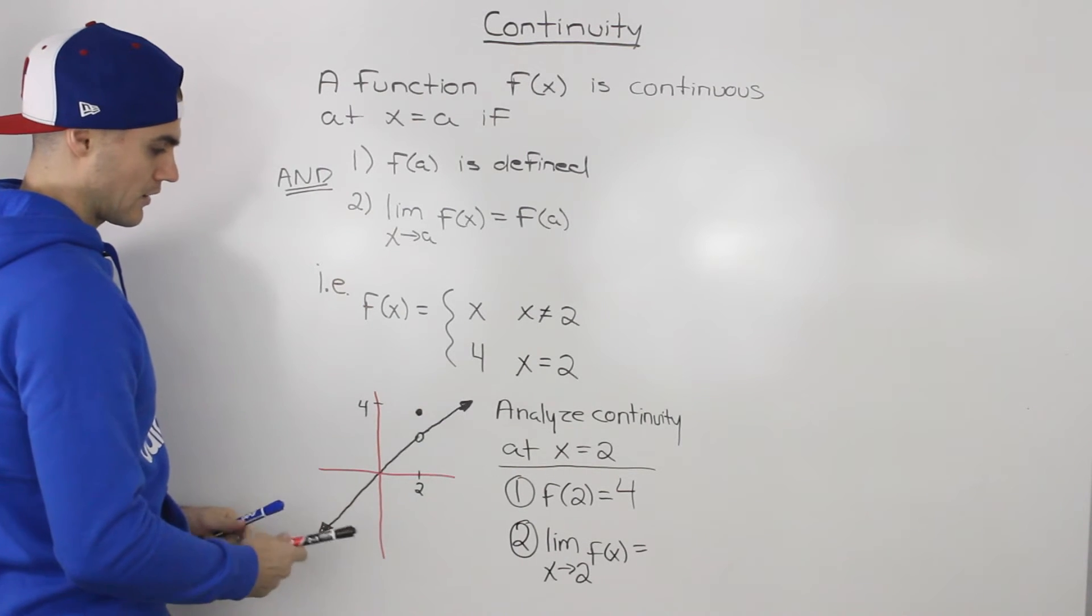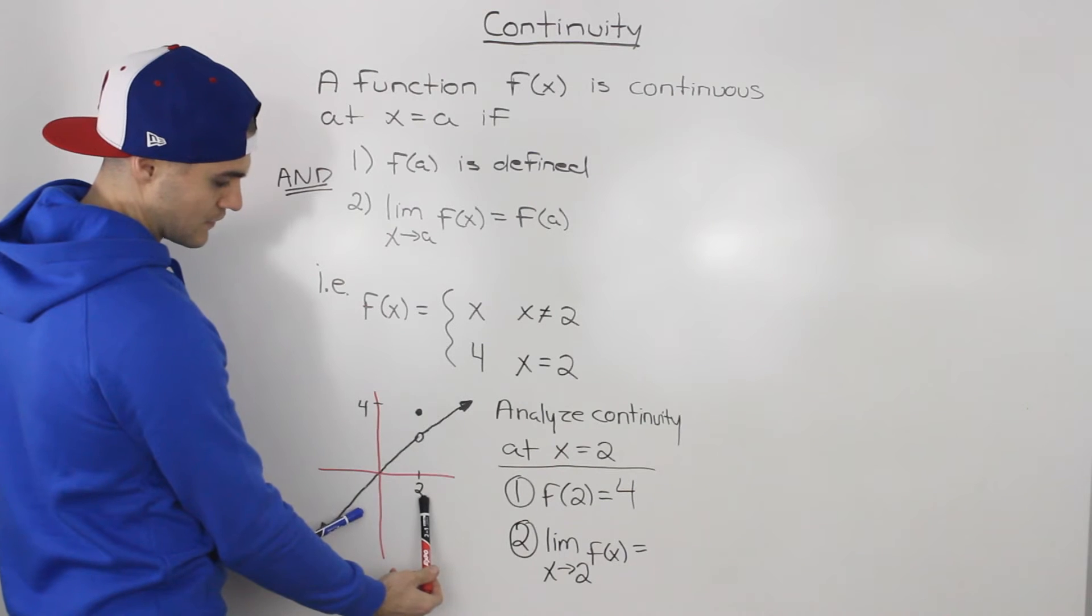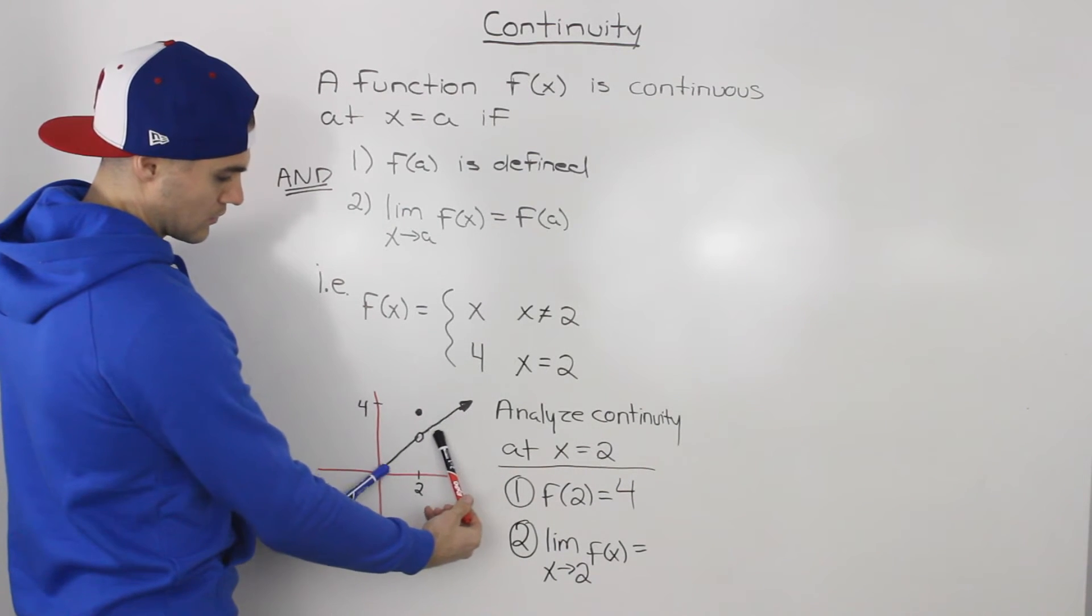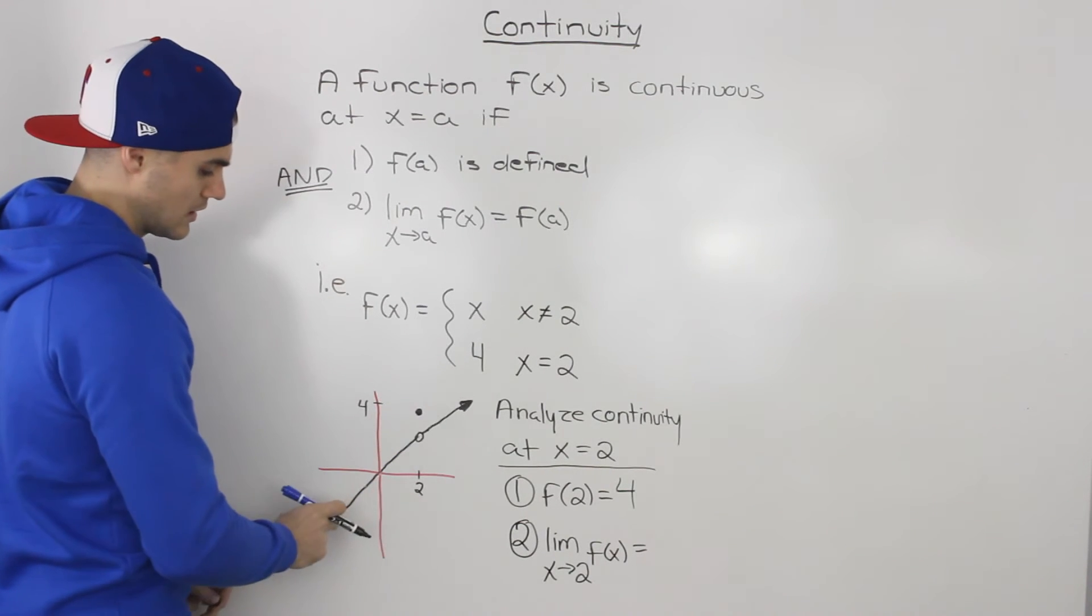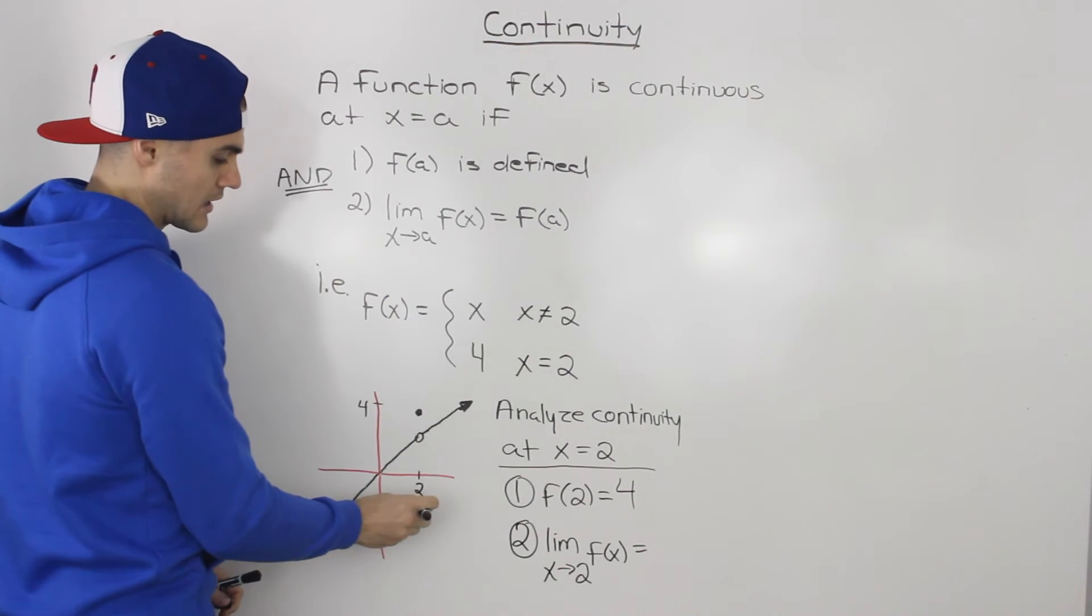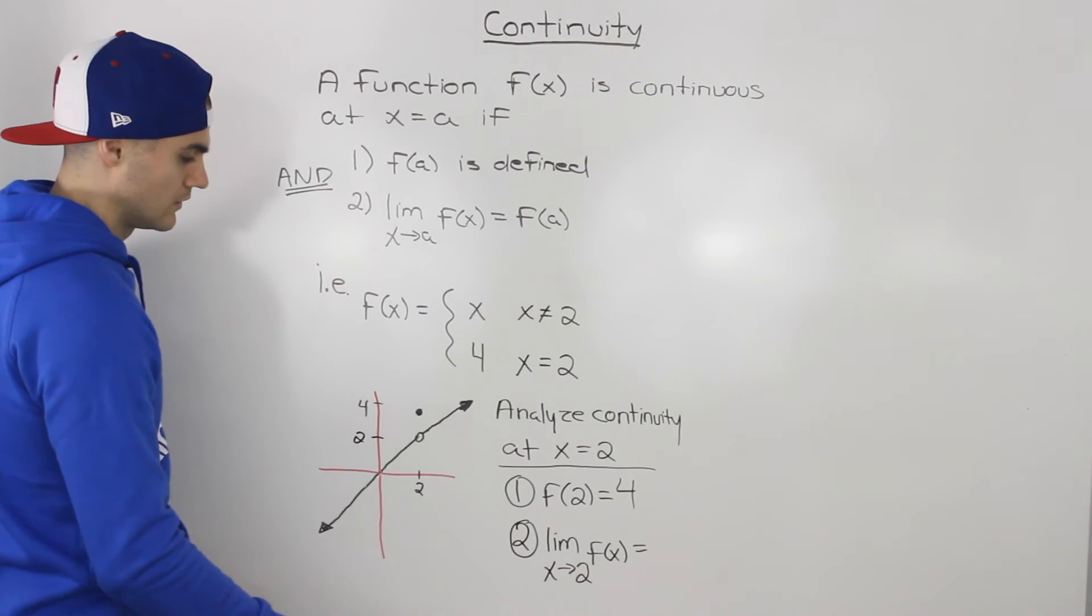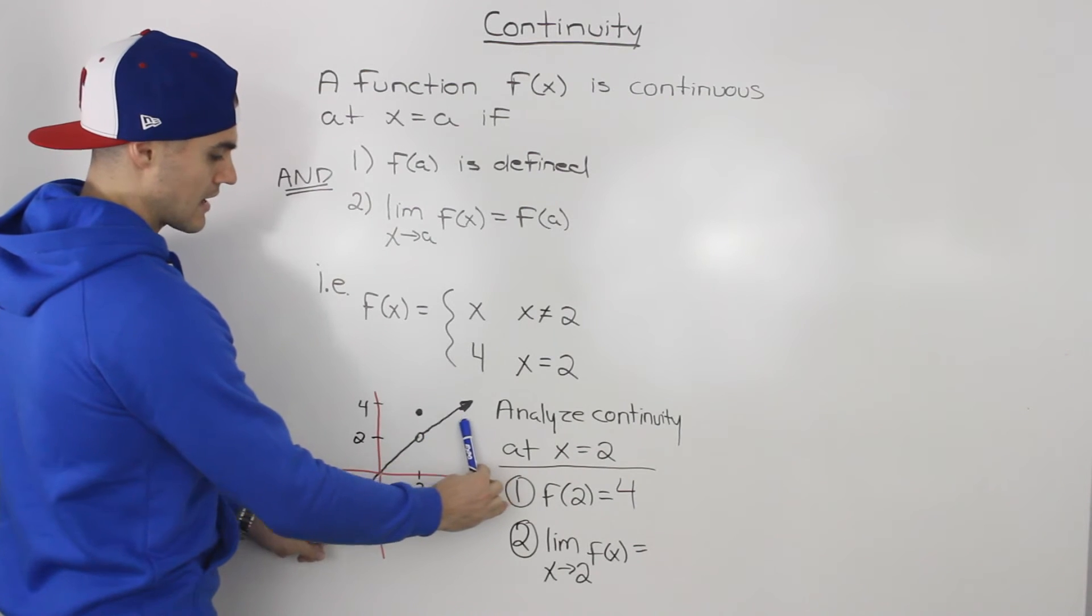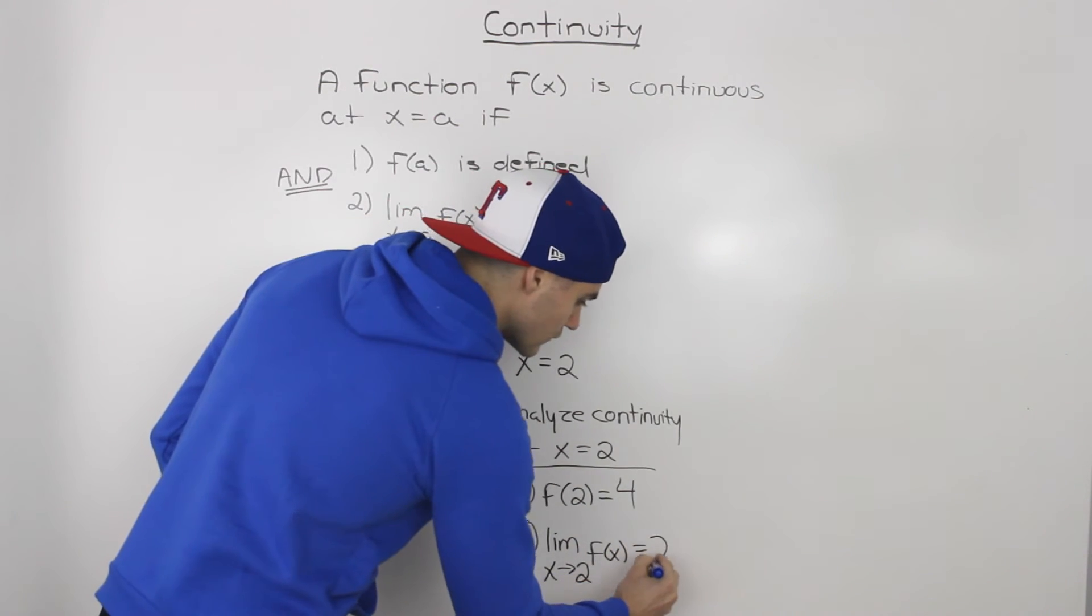So we can look at our graph and notice that as we approach this x value of two from both the left side and the right side, the function is approaching a certain y value. And the y value that it's approaching, because this line is equal to x, y equals x, then at an x value of two, we know that that y value is two as well. So as we're approaching that x value of two from both the left side and the right side, the function is approaching a y value of two.